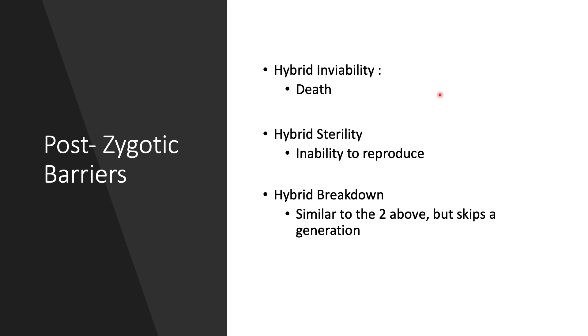We also have hybrid breakdown, which is similar to the previous two cases but skips a generation. So somehow we do get an offspring, but the next generation will be sterile or may pass away.